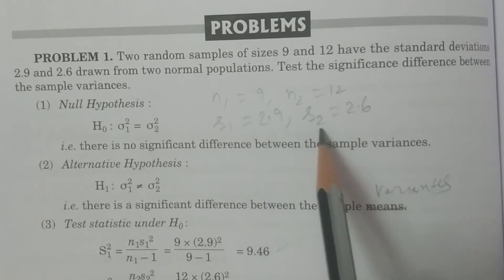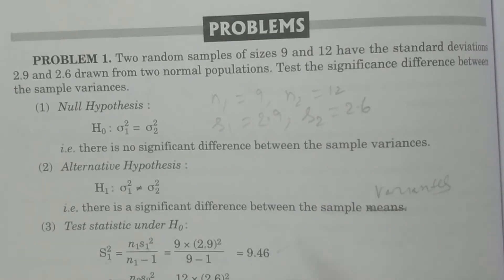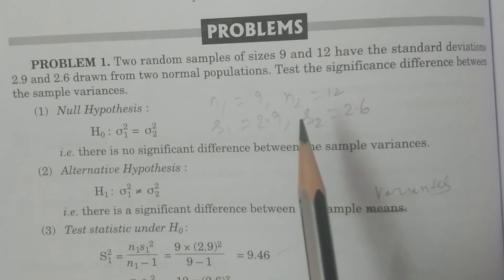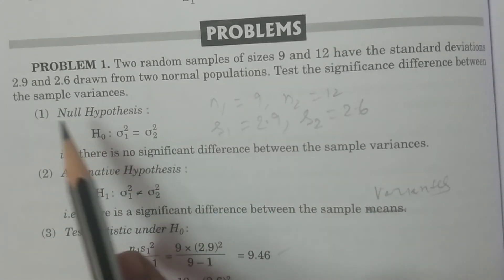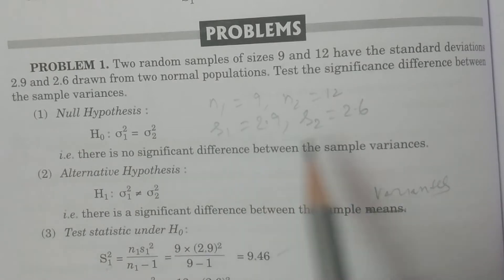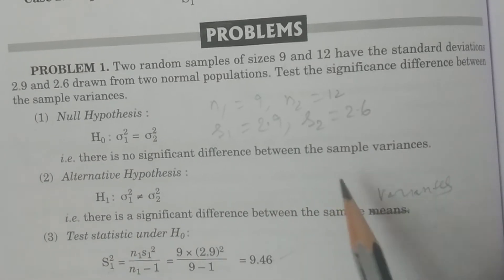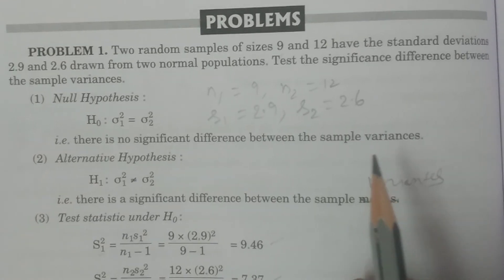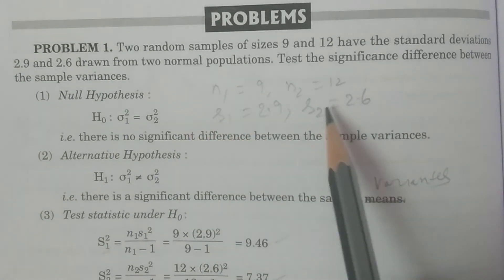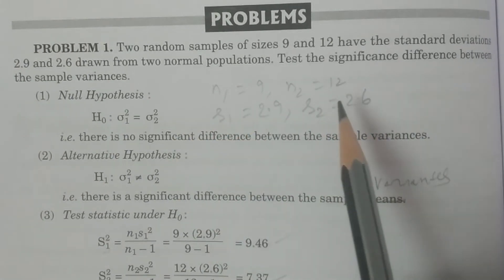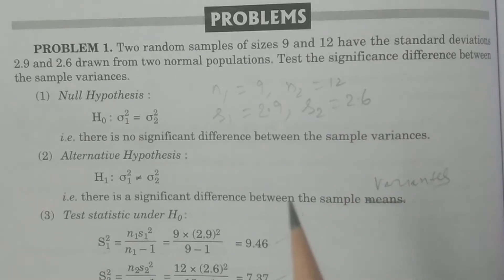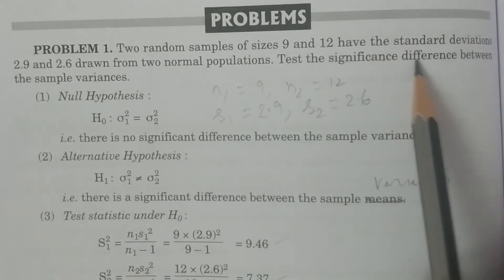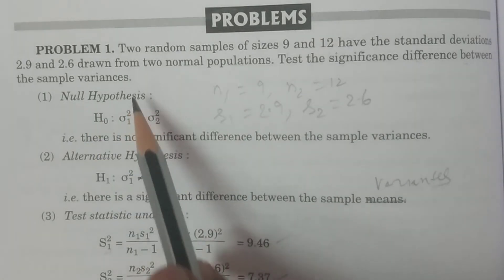Variance is S1 squared and S2 squared. When you have standard deviations, we convert them to variances by squaring the values. Now this test is the variances test.